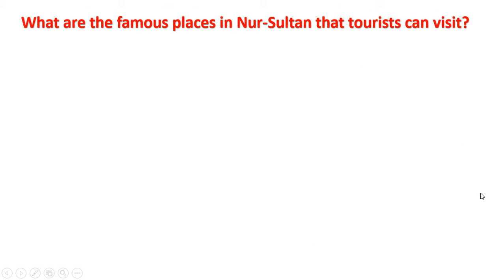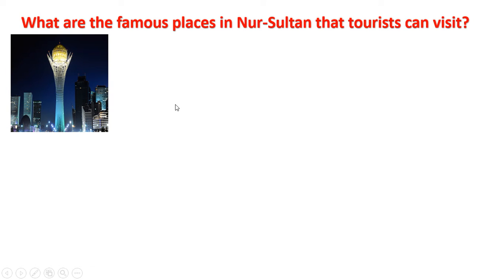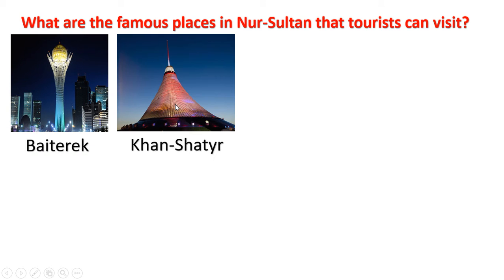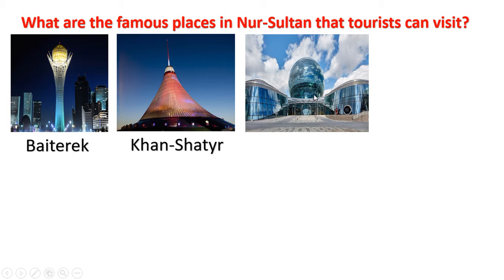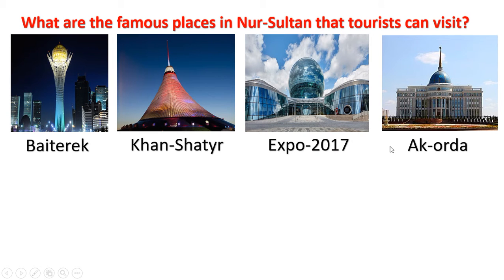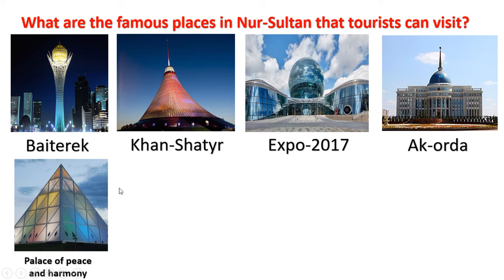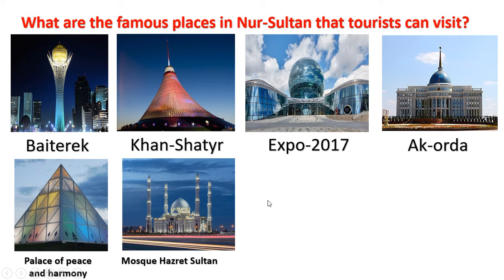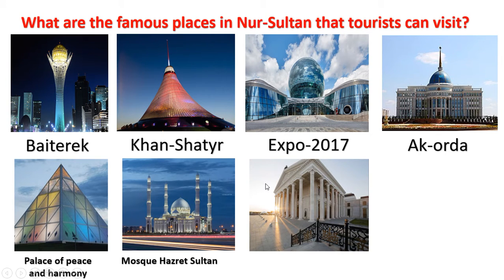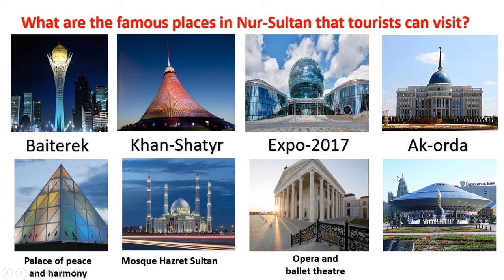Can you name the famous places in Nur-Sultan that tourists can visit? They are: Baiterek, Khan Shatyr, Expo 2017, Ak Orda, Palace of Peace and Harmony, Hazret Sultan Mosque, Opera and Ballet Theater, and Astana Circus. These are our landmarks in Nur-Sultan.